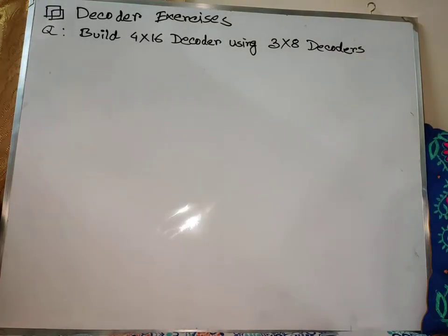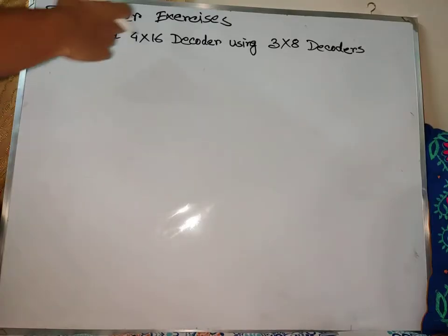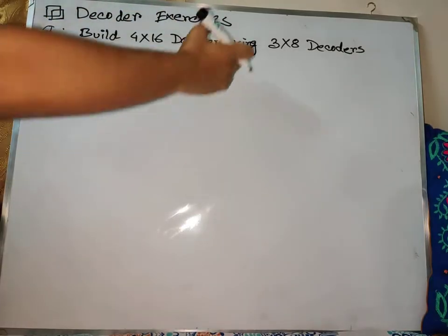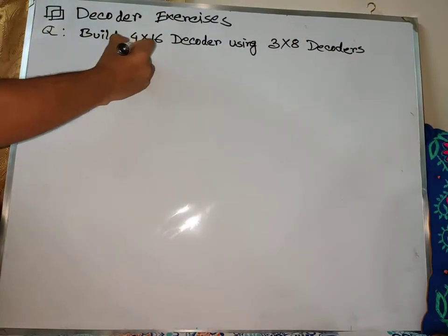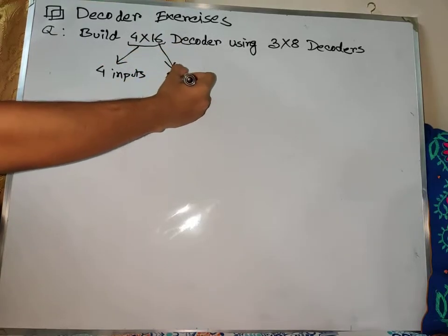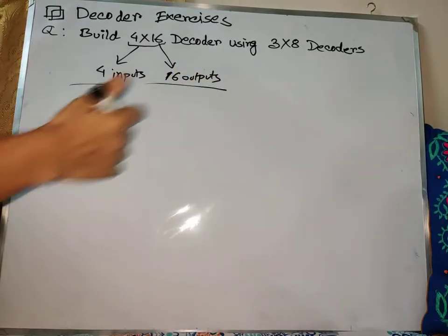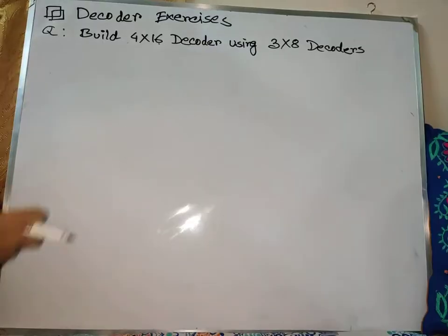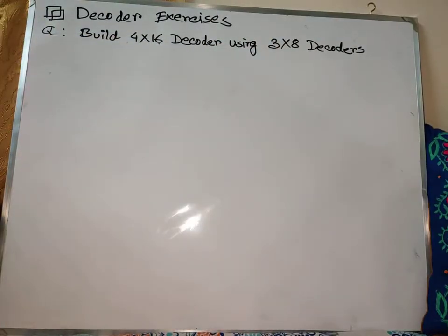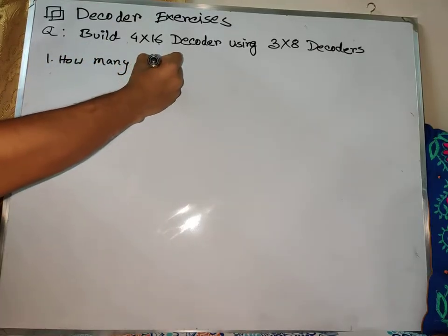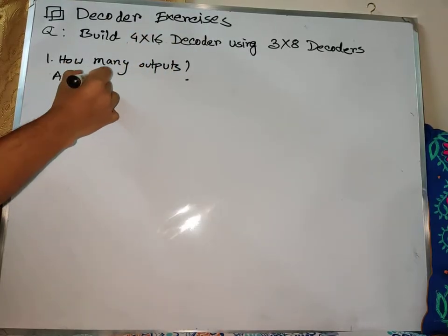Assalamualaikum. In this tutorial, we will check the decoder. This tutorial is designed for a 4x16 decoder using 3x8 decoders. We have 4 inputs and 16 outputs. We will check how many outputs, so the output is 8 times 16.